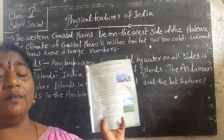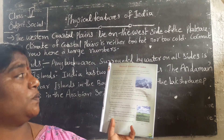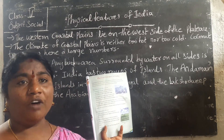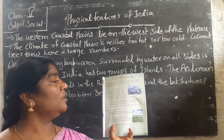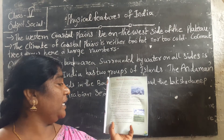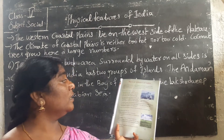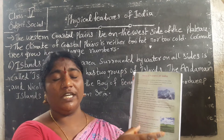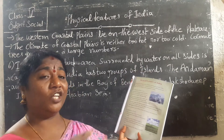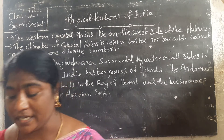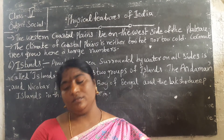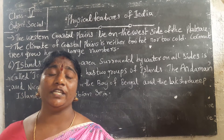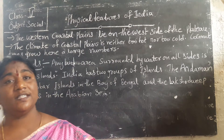What are the physical features of India? Land forms like mountains, plains, and deserts are called physical features of a country. In our India, the highest mountain range is the Himalayas. The Himalayas are a chain of mountains called a mountain range.